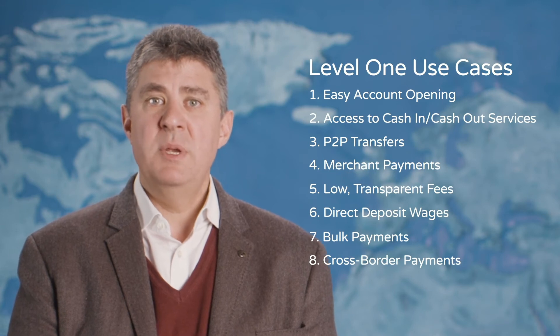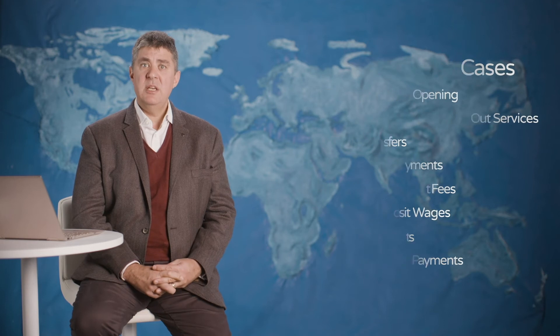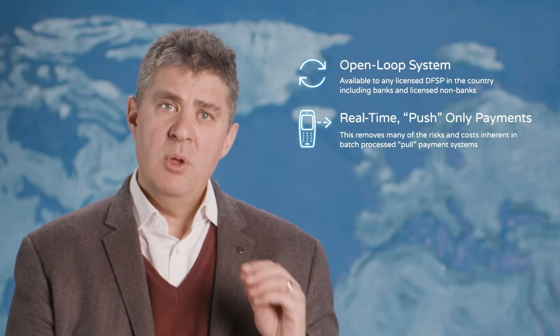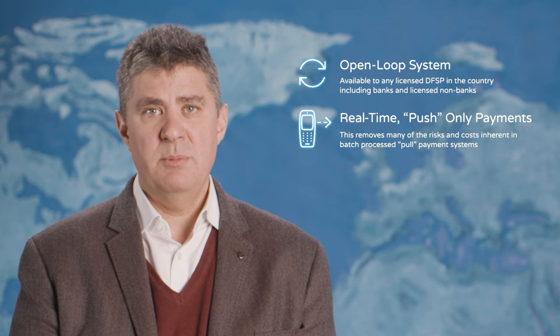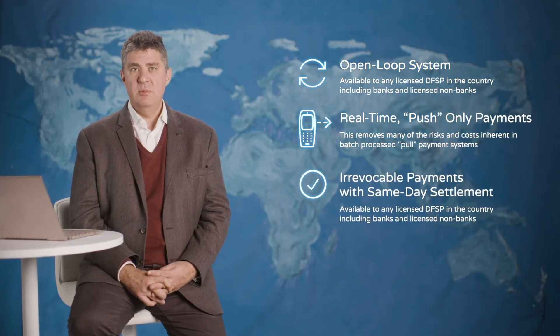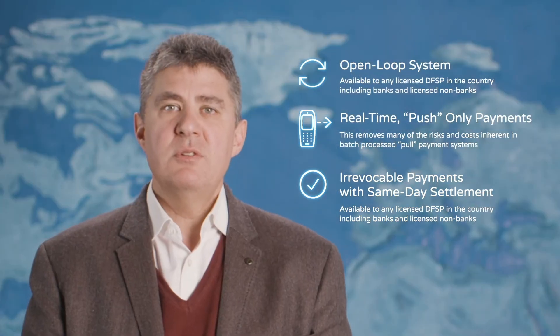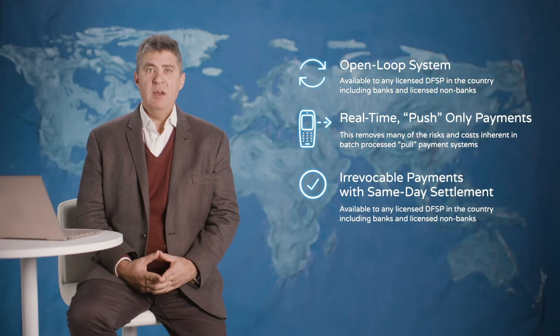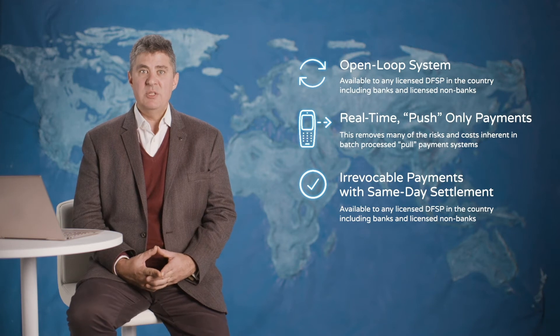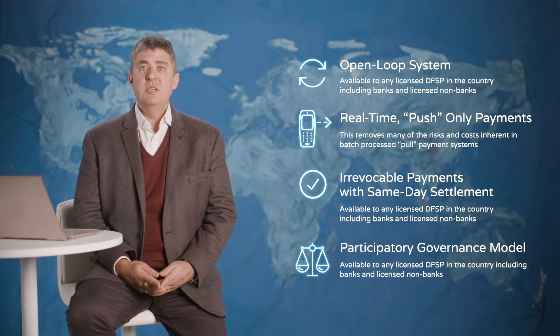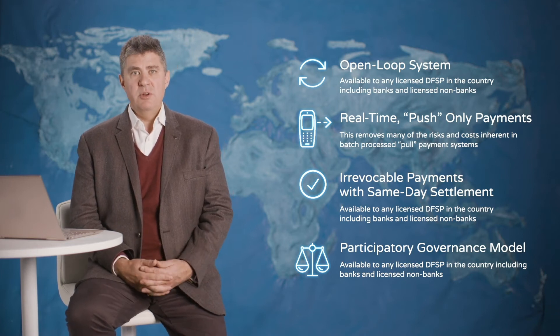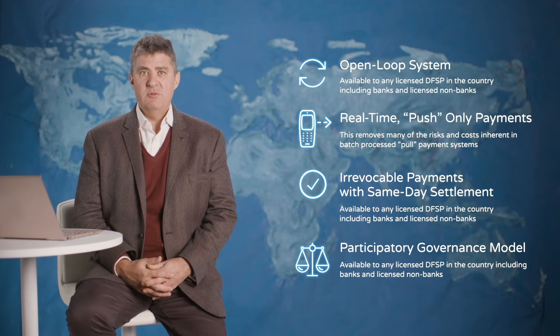To do that, Mojaloop has been designed in a certain way. As a Level 1 aligned switch, it adheres to a number of principles. Most importantly, it must be an open system accessible to all categories of financial service providers. It must power real-time, push-only payments, meaning they must not delay the clearance of funds or allow funds to be extracted from accounts without explicit consent. It must make payments irrevocable with near real-time settlement, or at least same day. This reduces complexity and costs. High-frequency settlement reduces liquidity burdens on DFSPs, allowing smaller and larger DFSPs to better interact. And our switch must also follow a participatory governance model, because a community approach to evolving the services ensures transparency and improvements that drive the whole ecosystem forward.